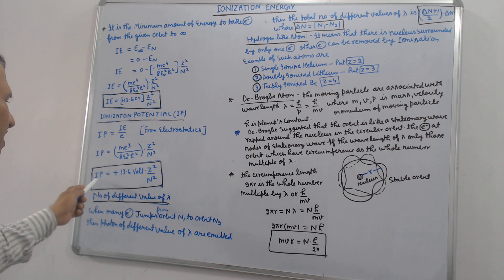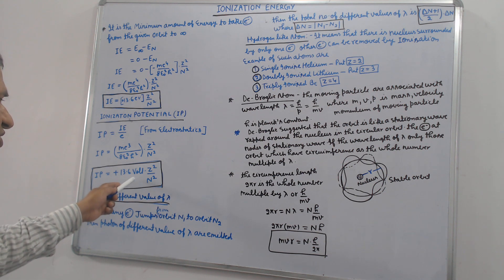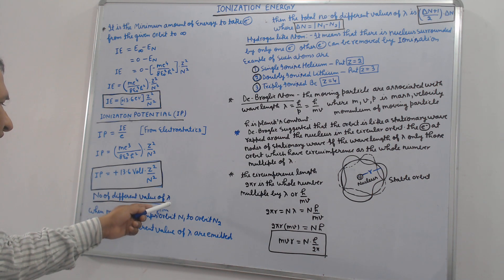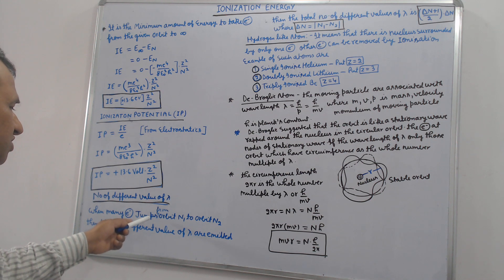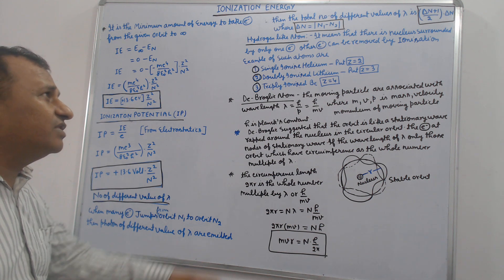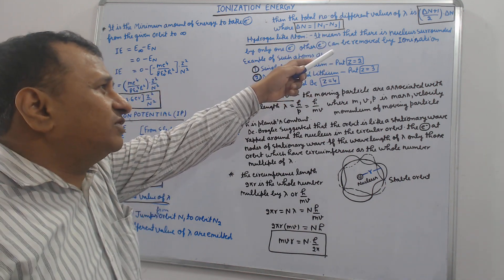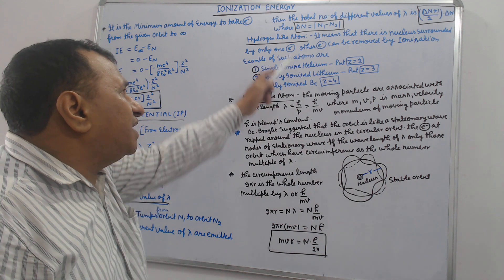Number of different values of lambda: when many electrons jump from orbit N₁ to orbit N₂, then photons of different values of lambda are emitted. The total number of different values of lambda is ΔN plus 1 upon 2 into ΔN. ΔN equals mod N₁ minus N₂.